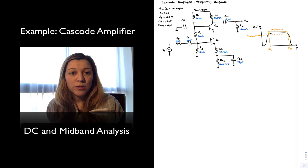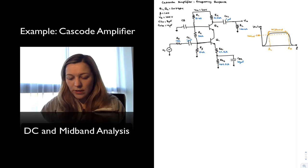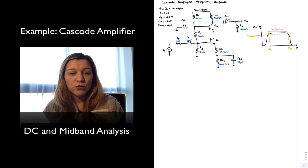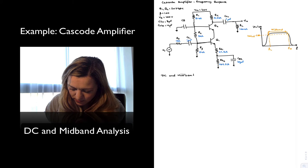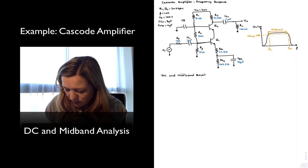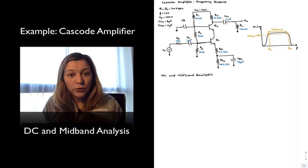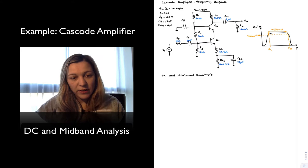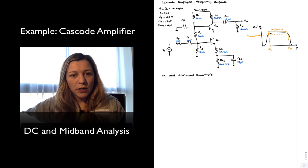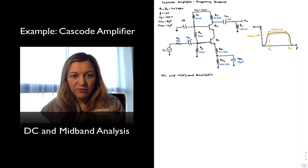In the next few videos, we're going to be doing the analysis of a Cascode amplifier. I have drawn a Cascode amplifier, and the first thing we're going to do is the DC and mid-band analysis. In a Cascode amplifier, I have two transistors, Q1 and Q2. Q1 forms a common emitter, and then it feeds into Q2, which is a common base amplifier.